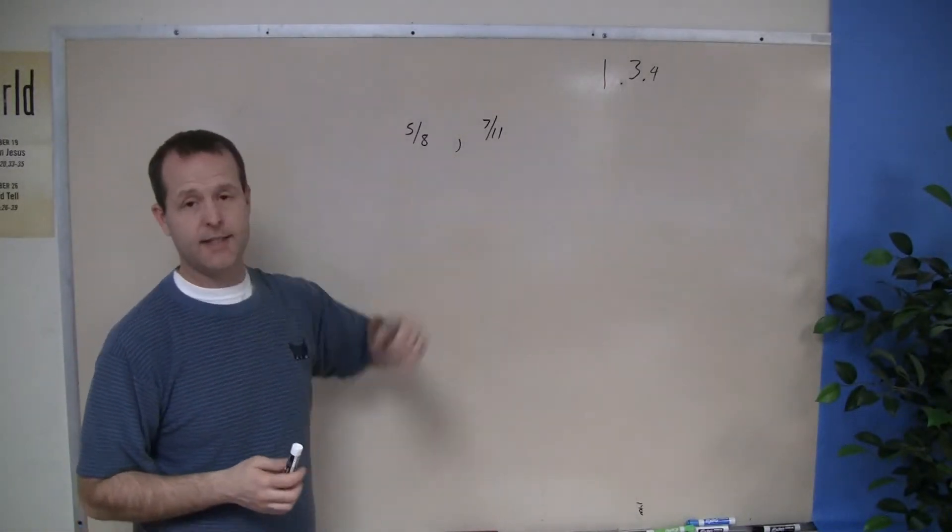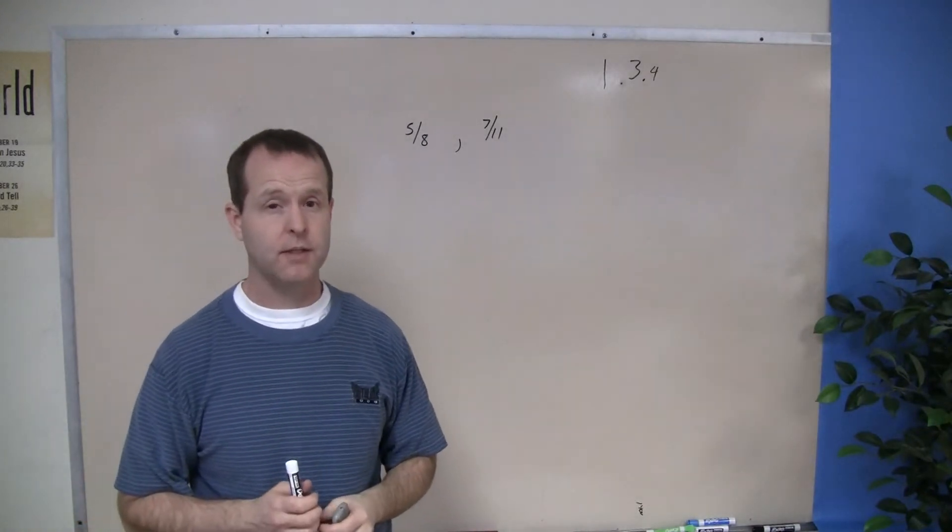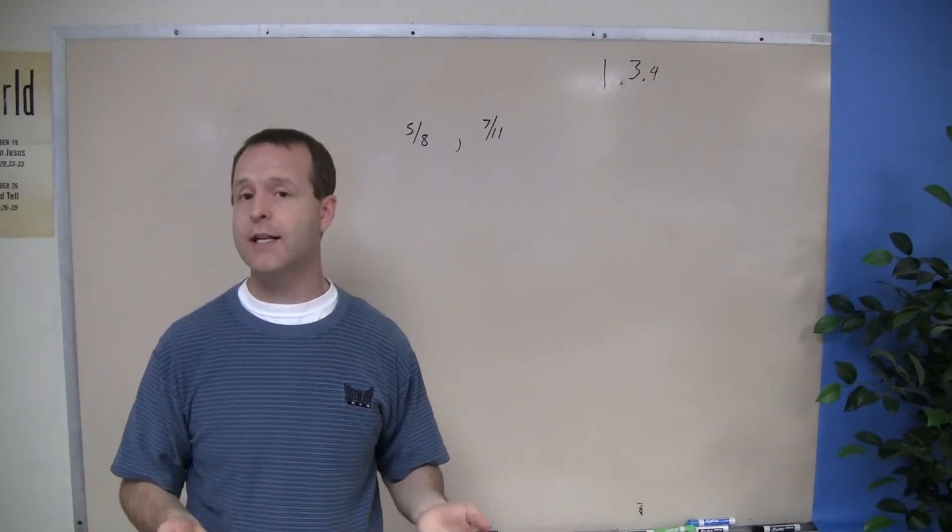We have numbers 5/8 and 7/11. They're fractions, but they're also rational numbers. Well, I can convert these fractions into a decimal form.